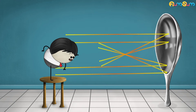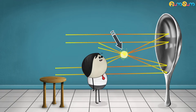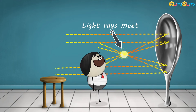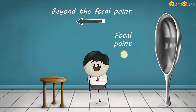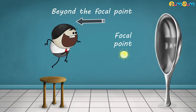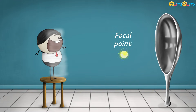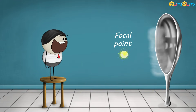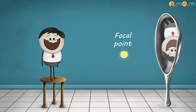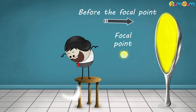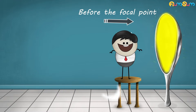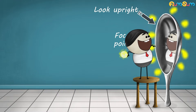Now, the point where all these light rays meet is called the focal point. When you stand beyond this point, only then will you be able to see an inverted image of yourself. However, if you stand before the focal point, the image will look upright.